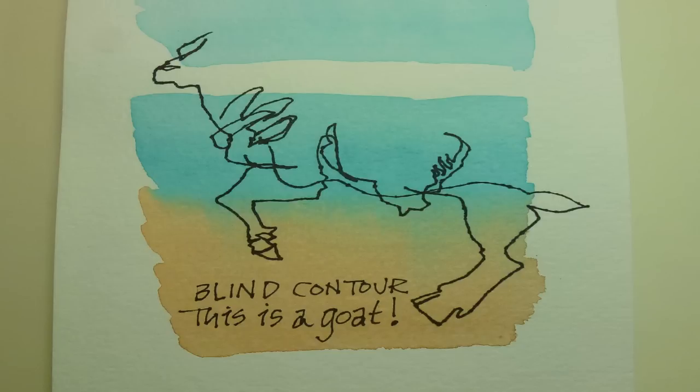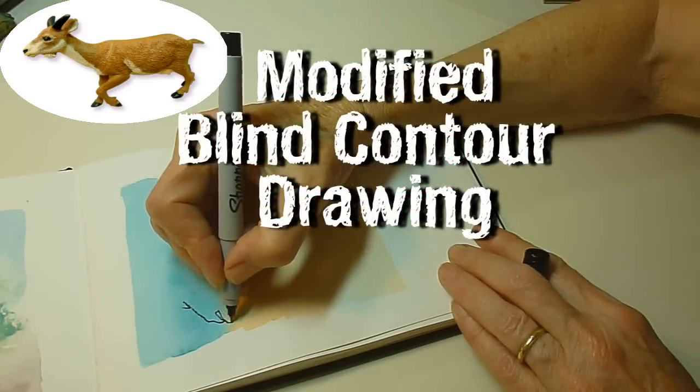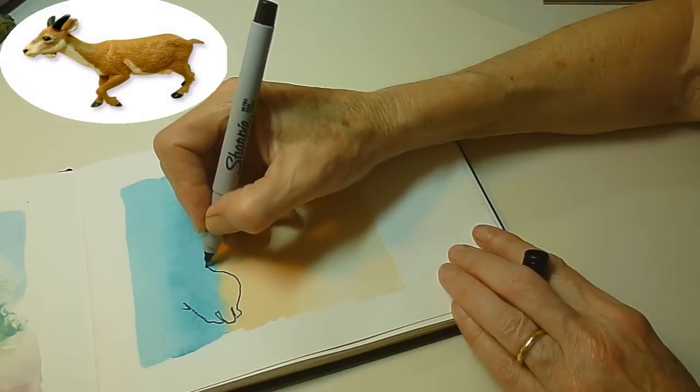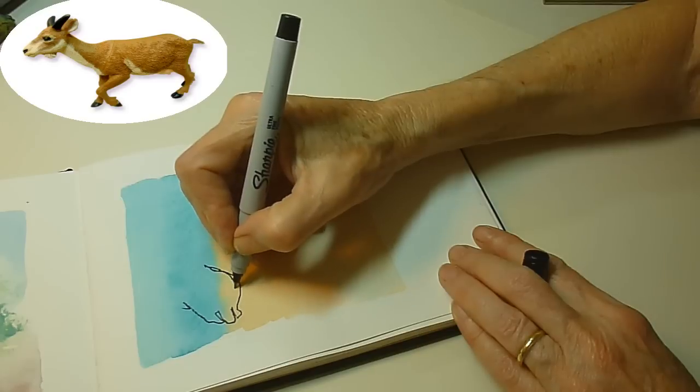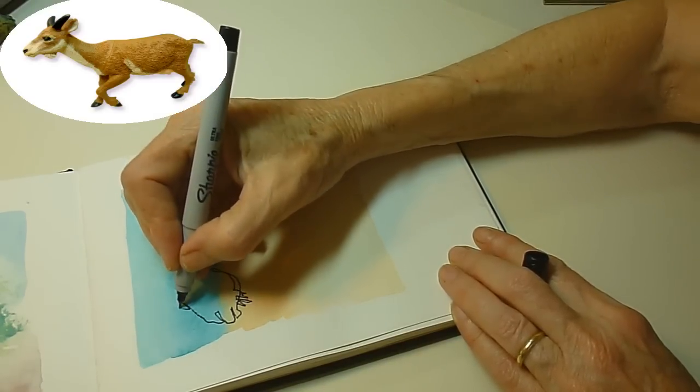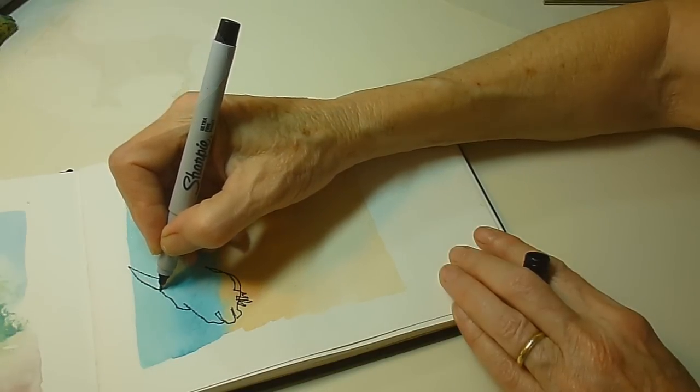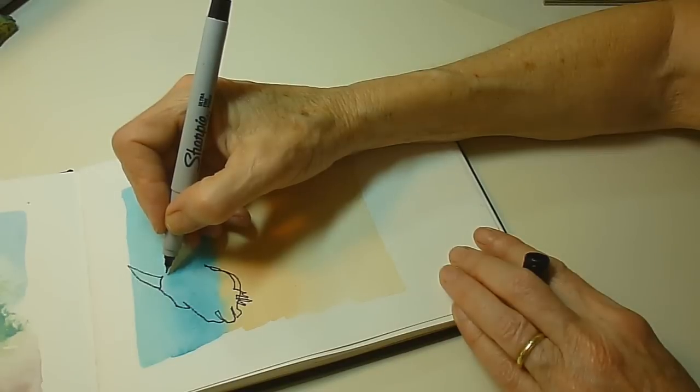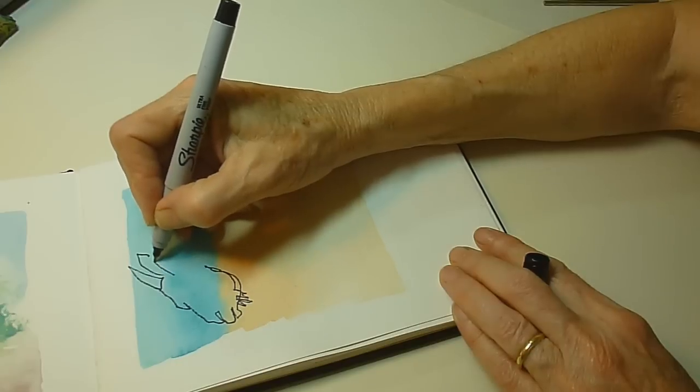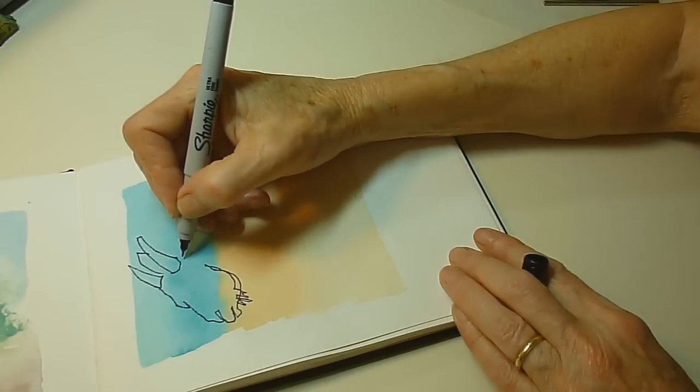I'll draw the goat again using modified blind contour this time. I start the same way and in the same place. As my pen is moving, my eye is on the creature. But with modified blind contour, if I find myself not quite sure where I'm going with my pen, I lift the pen, look at my paper, and make adjustments with pen placement if I need to. But my pen does not start moving again until my eyes are back on the goat.